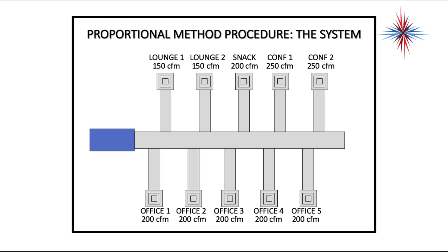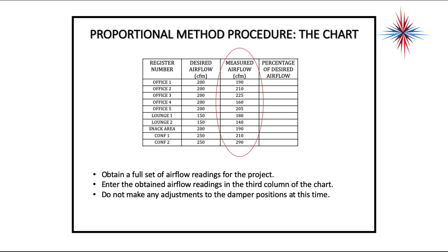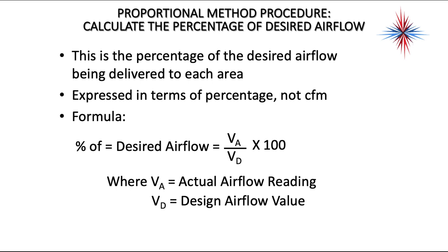This is the same diagram we talked about in the last video. We probably have 1,400 CFM required — we should measure 1,400 CFM, but that doesn't often happen and you'll have to repair leaks. You start by entering the register location and the desired airflow. The desired or designed CFM values come from the project plans or prints. Obtain a full set of readings without adjusting any dampers. The percentage of desired airflow formula is: actual volume divided by desired value, multiplied by 100.